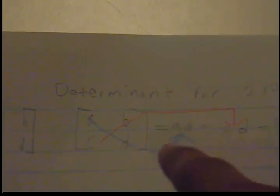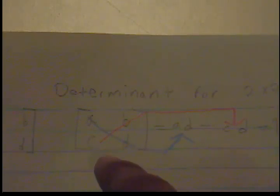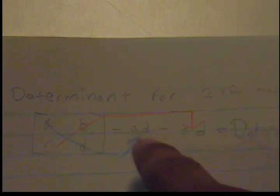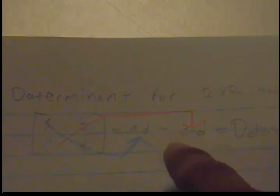To find a determinant of a 2x2 matrix like this one right here, you would multiply diagonally down first, which is A times D, and then you multiply diagonally up, C times B, and then you subtract the difference of AD minus CB, which would give you a 2x2 matrix determinant.